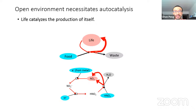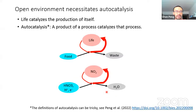This is similar to the nitrogen dioxide example: nitrogen dioxide catalyzes the production of itself by consuming electrons, protons, and nitric acid. According to the definition given by IUPAC, when a product of a process catalyzes that process, it is called autocatalysis. In this talk I will stick with this definition, although there have been multiple definitions of autocatalysis. If you are interested, you may check my recent publication on bioRxiv.